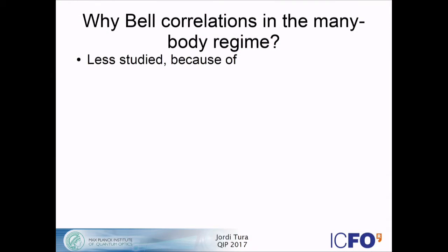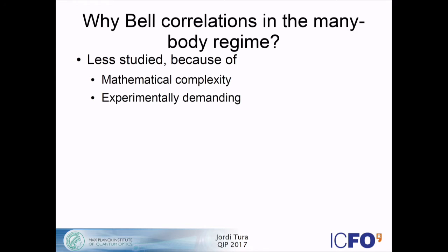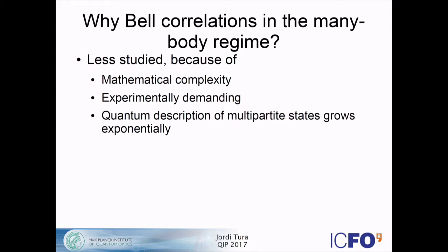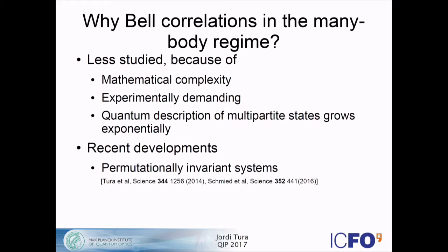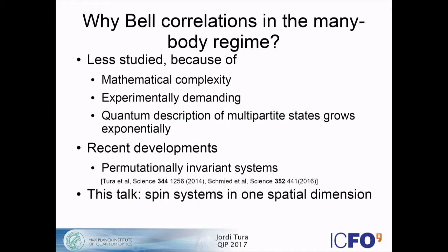Why study them in the many-body regime? This is a less studied question for three reasons. First, there is the mathematical complexity of the problem. Second, it's experimentally demanding to test for this kind of correlations — it was only done in a loophole-free way for bipartite systems recently. And theoretically, the quantum description of multipartite states grows exponentially, so it's difficult to deal with. There have been recent results for permutational invariant systems — an experiment in Basel for a BEC of hundreds of particles detected these correlations. In this talk, I focus on spin systems in one spatial dimension, which requires very different tools.